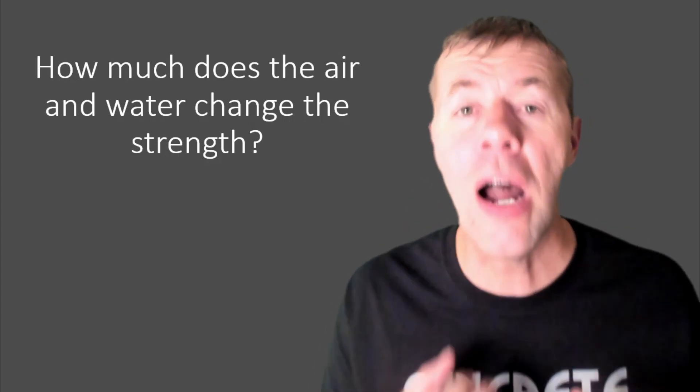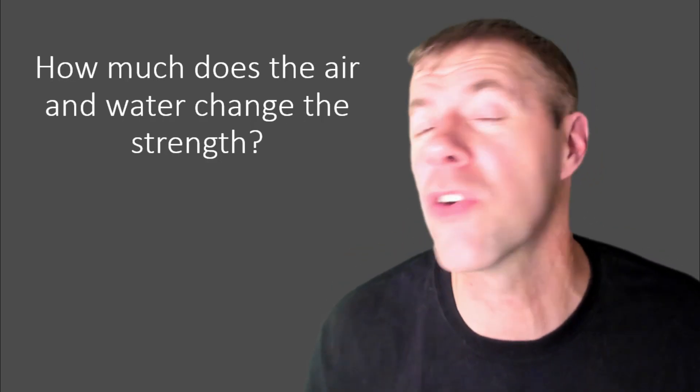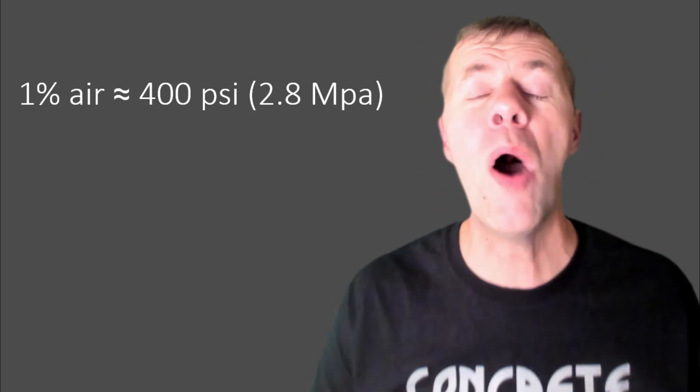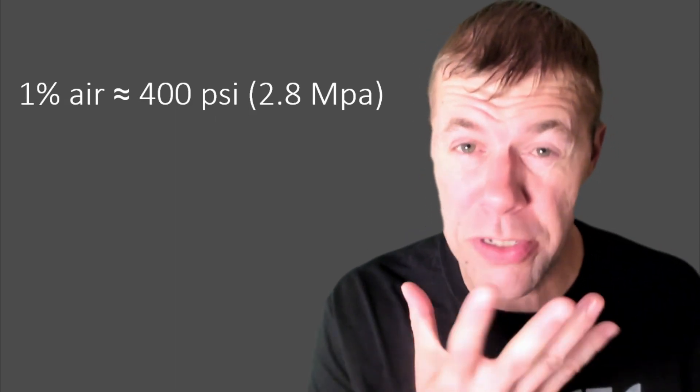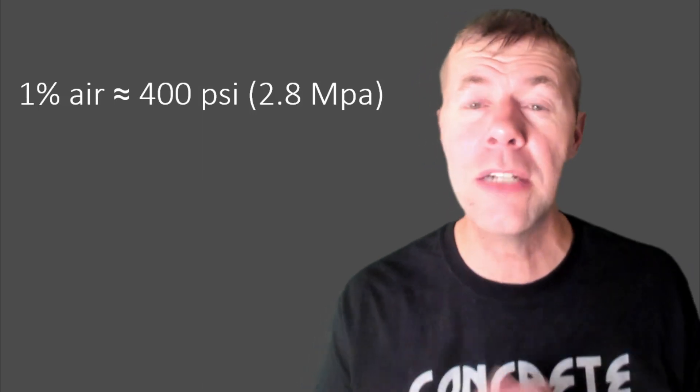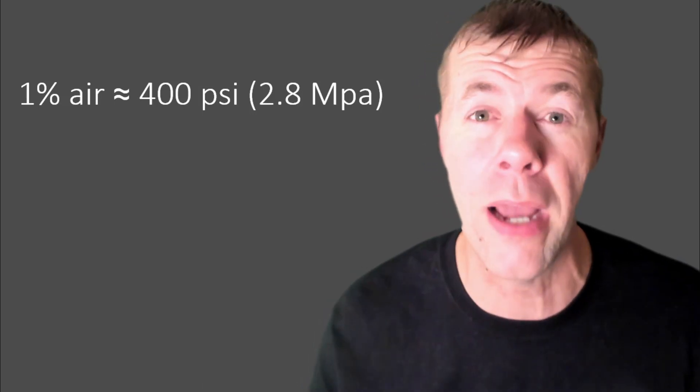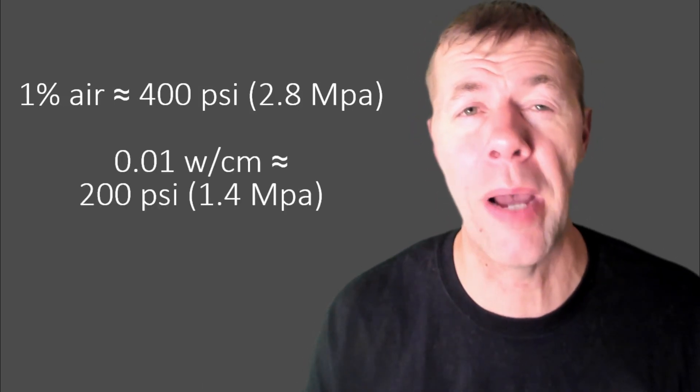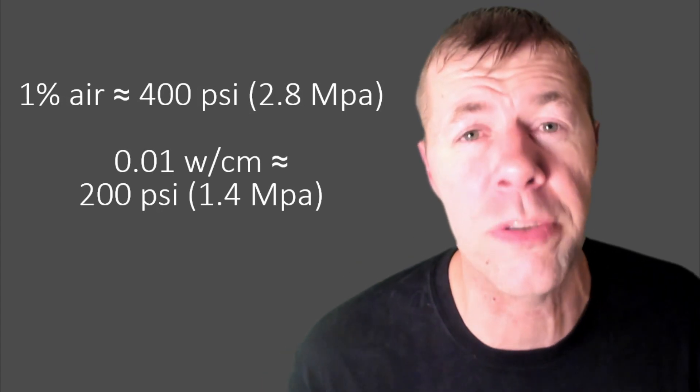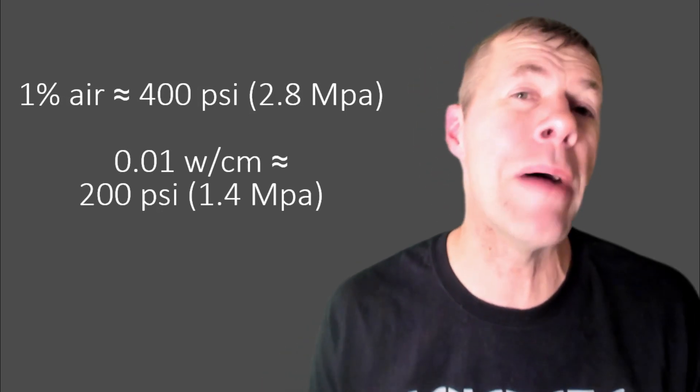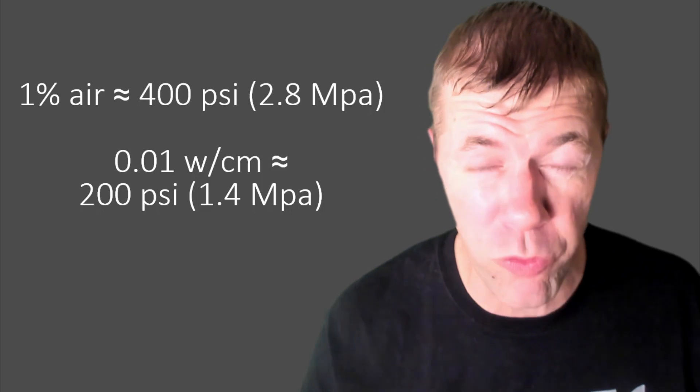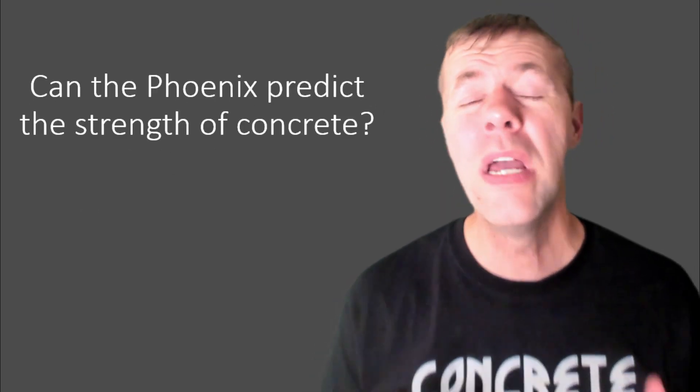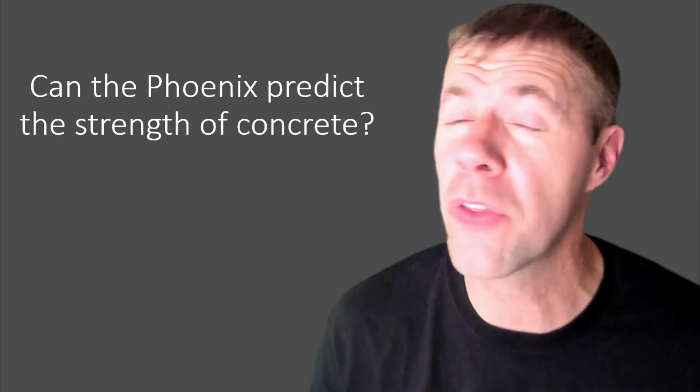So how much does the air and water really change the strength of a concrete mixture? Well, for every about one percent air, at least with the materials that I just showed you, it changed the strength by about 400 psi or 2.8 megapascals. But for every 0.01 water-to-cement ratio change, it changed it by about 200 psi or about 1.4 megapascals. So can the Phoenix predict the strength of the concrete?